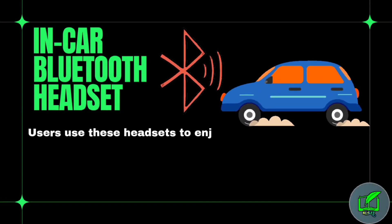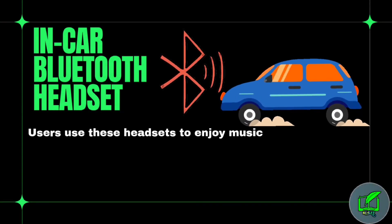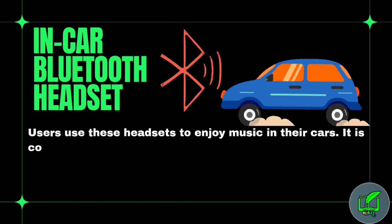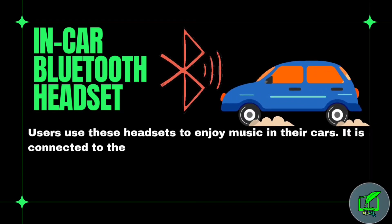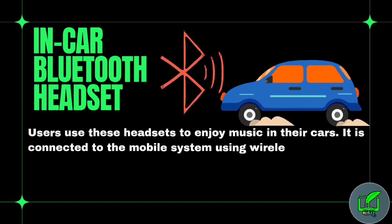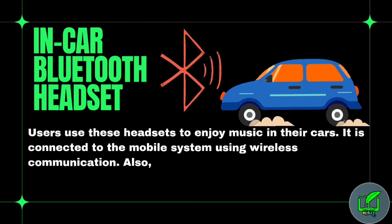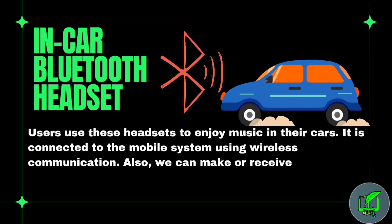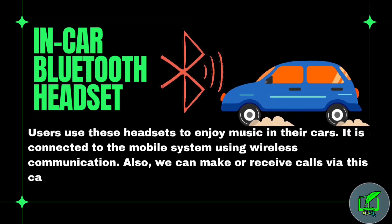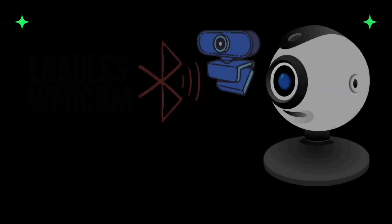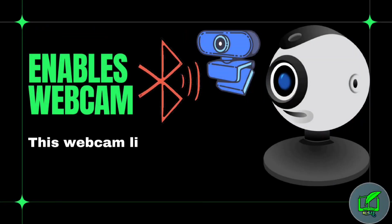In-car Bluetooth headset — users use this headset to enjoy music in the car. It is connected to the car mobile system using wireless communication, and we can also make or receive calls using this car speaker system. Enable webcam also connects the camera without wired communications.